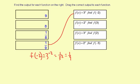For the next one, f of x equals 2 to the x. Find f of 3. f of 3 equals 2 to the 3rd, which is 8. So f of 3 equals 8.